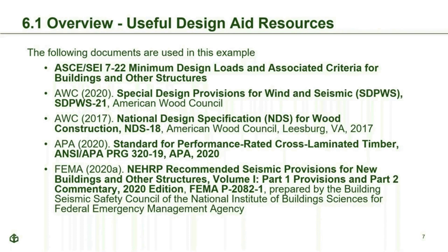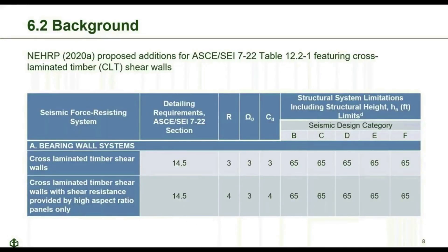Before going further, Phil turns it over to Omar for background on the CLT shear wall system. The CLT shear wall system is included in ASCE 7-22 Table 12.2-1. There are two variants: CLT shear walls with R=3, overstrength factor of 3, and deflection amplification factor of 3; and CLT shear walls with shear resistance provided by high aspect ratio panels only, with R=4, overstrength factor of 3, and deflection amplification factor of 4.